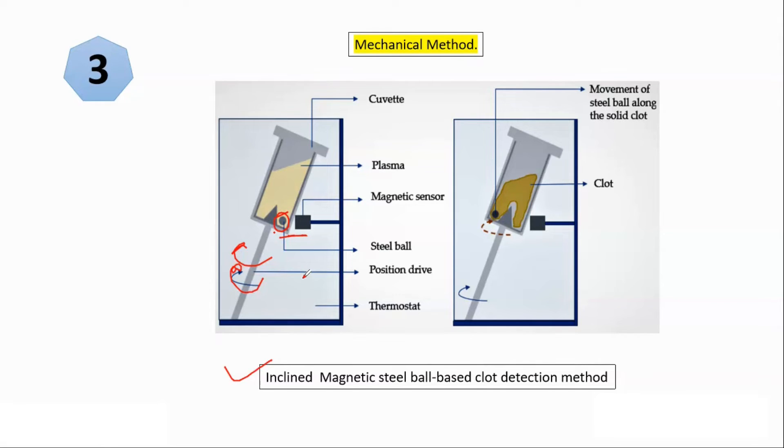So everything is going to rotate as whole system is rotating, but due to presence of magnetic sensor, steel ball will stay at that position. As plasma is liquid in nature at this point of time, so it will not take away the steel ball away from the magnet. But as soon as clot gets formed, or clot gets formed, so clot is solid. So here when the instrument is gonna rotate, the clot will rotate as plasma is coagulated so it is solid.